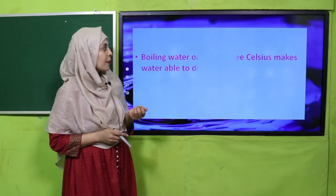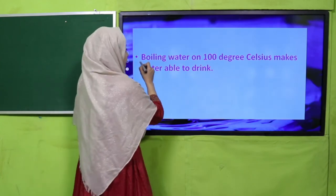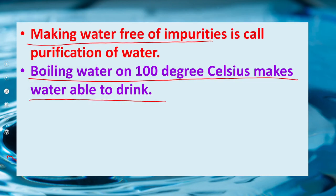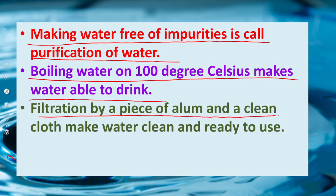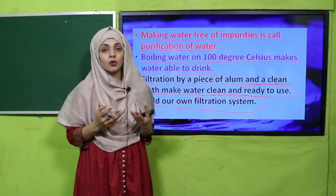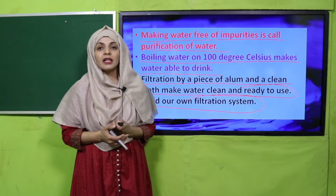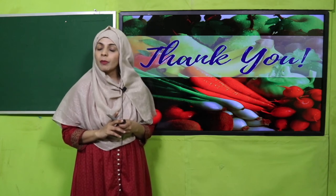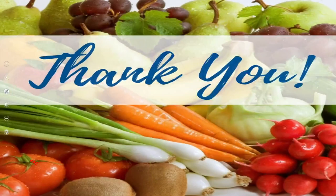For wrap-up: today we learned that boiling water at 100 degrees Celsius makes it safe to drink. Making water free of impurities is called purification. Filtration using a clean cloth makes water clean and ready to use. Build your own filtration system with homemade or disposable things. Try to drink clean water to keep yourself healthy, keep everybody around you safe. Have a good day — thank you so much and Allah Hafiz.